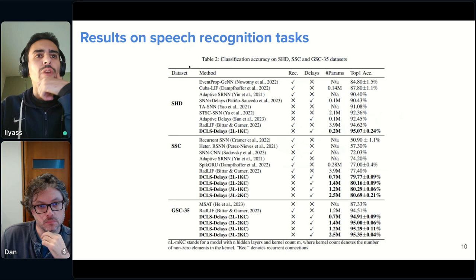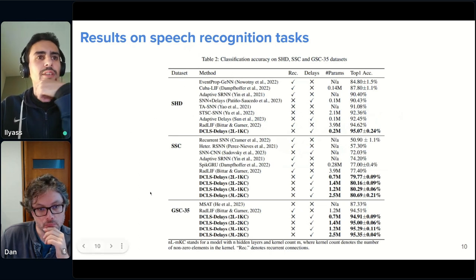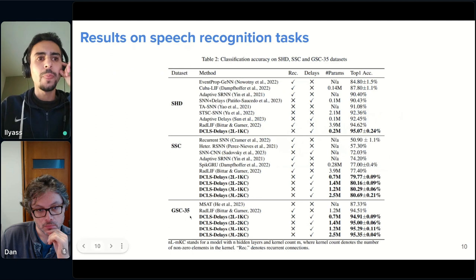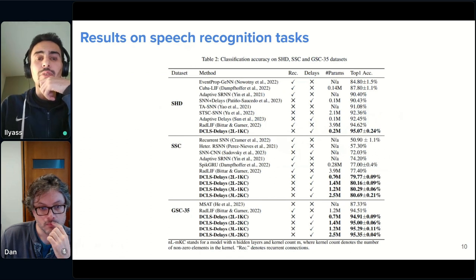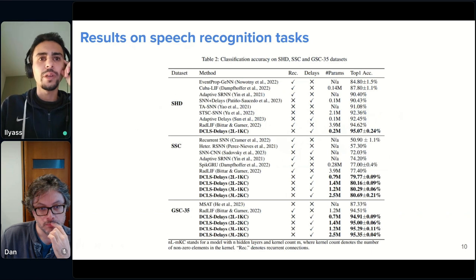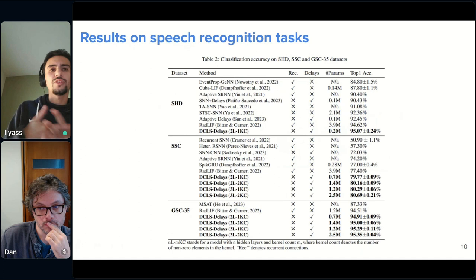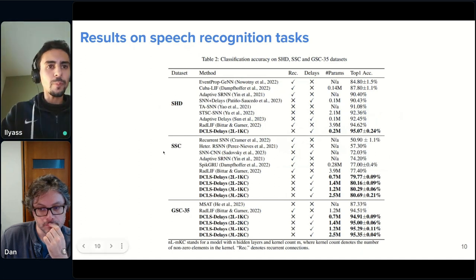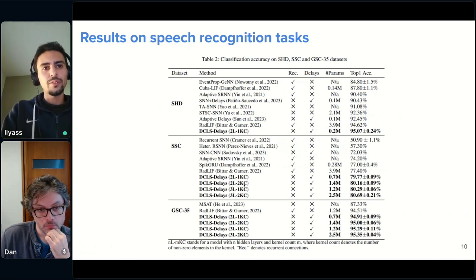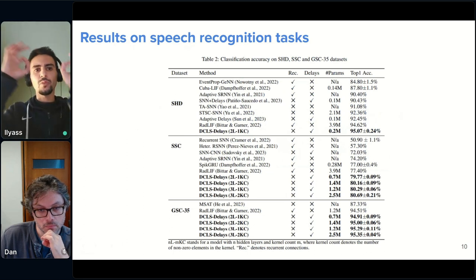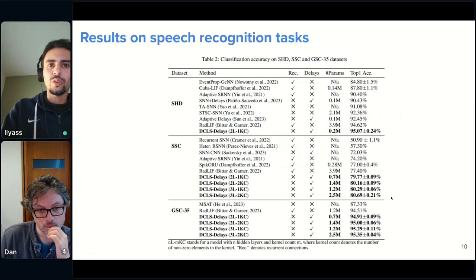And so, now, to show you some results of our method. We evaluated the method on three different data sets. The spiking Heidelberg digits, the Google speech commands, both the neuromorphic version and the non-neuromorphic version. In all three tasks, we obtained state-of-the-art results. While also having no recurrent connections and using a very small, very lightweight networks with a very small number of parameters. This is very good for edge computing and neuromorphic computing. And we also showed that the method scales. So, as we increase the number of layers, this is two layers, three layers, and the kernel count is just a number of synapses, synaptic connections between every two neurons. As we increase the size of the network, the accuracy increases as well.